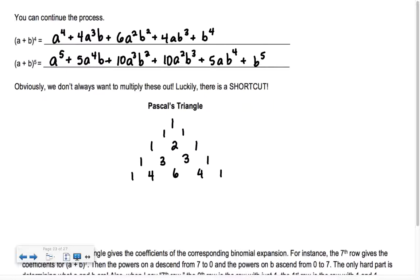Now look up here — 1, 4, 6, 4, 1. Do you see it? That matches what we had for (a + b)⁴. And what do we think the next row is? 1, 5, 10, 10, 5, 1.